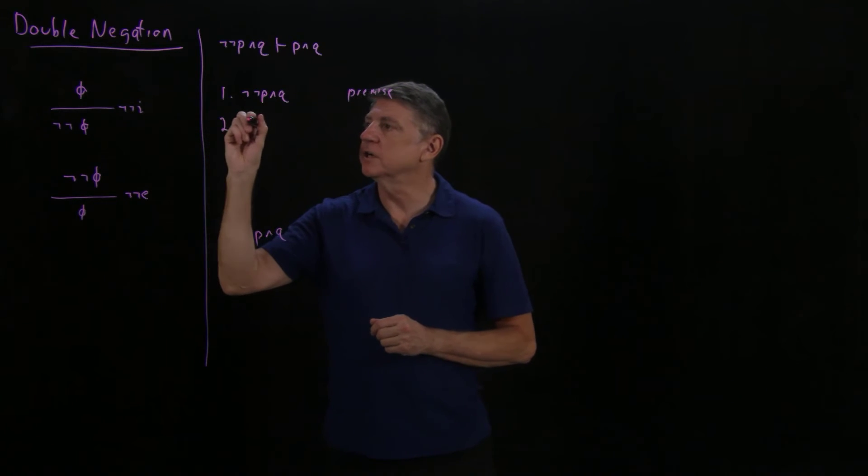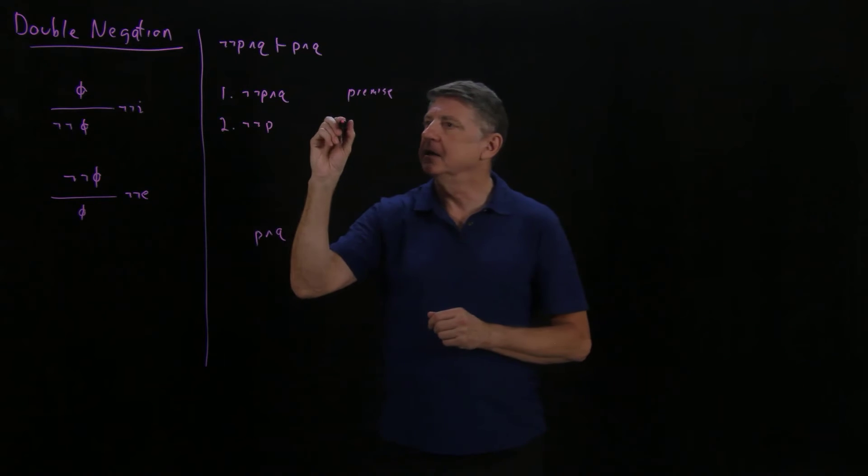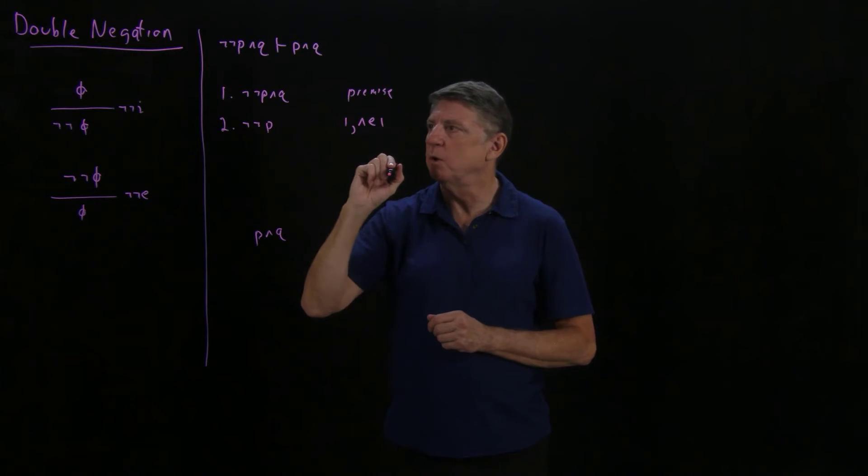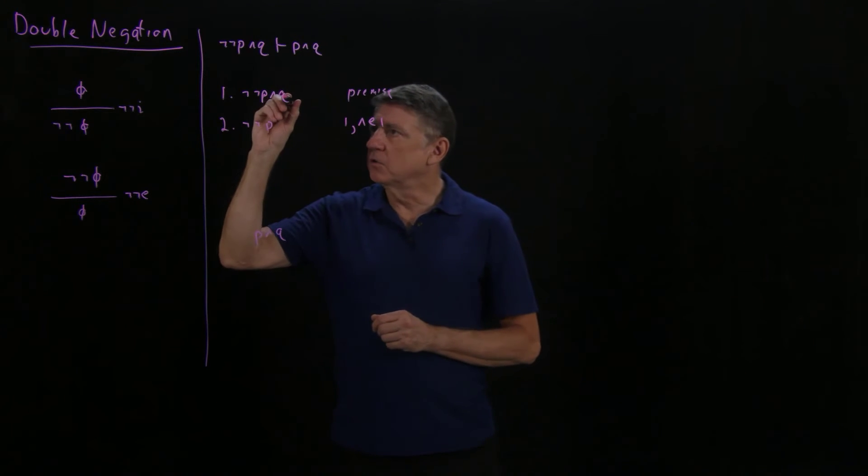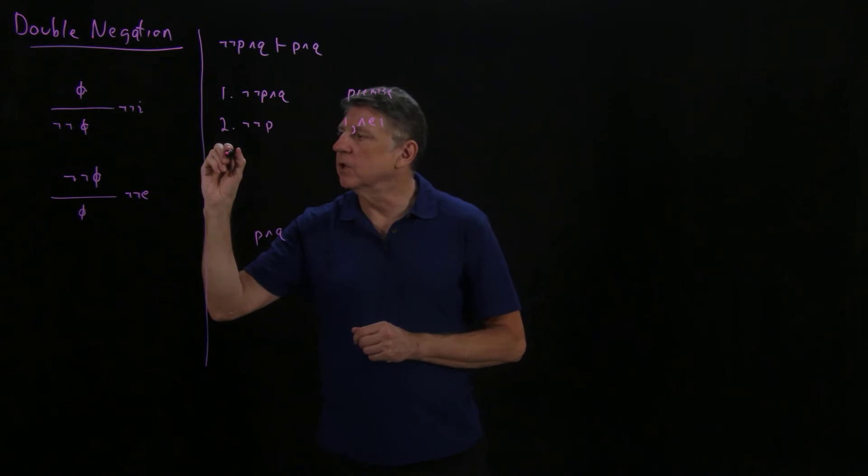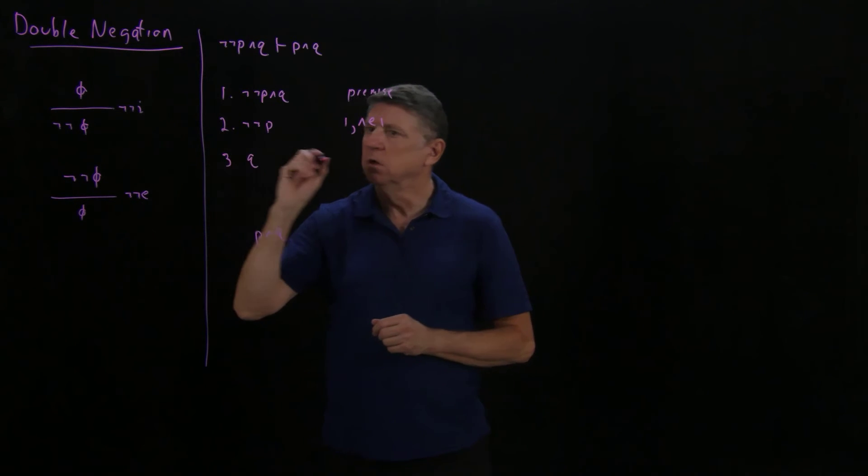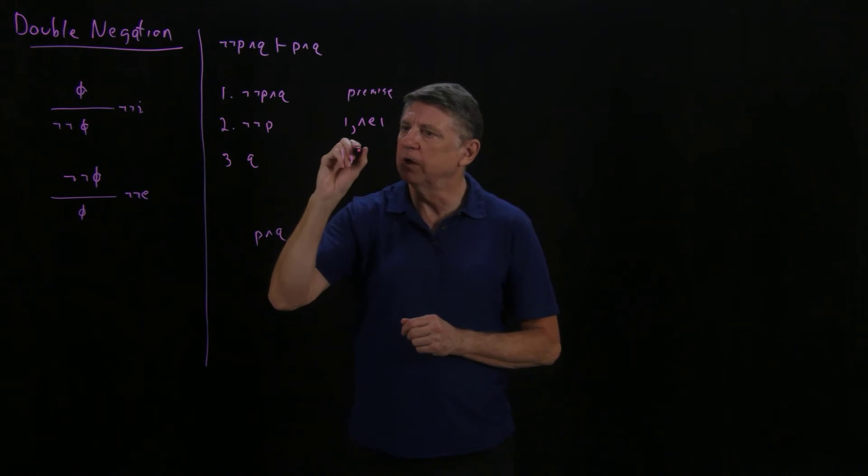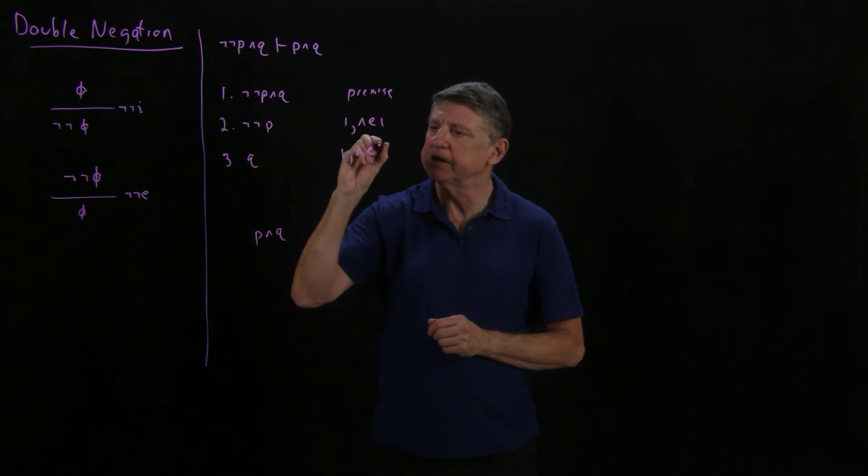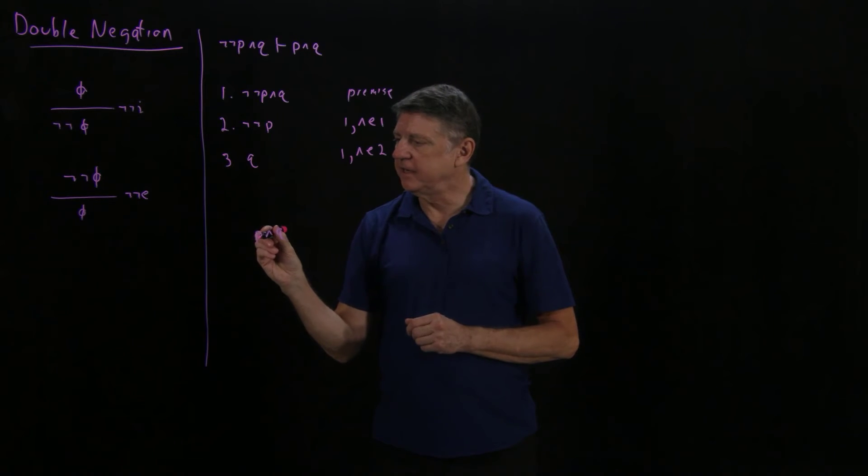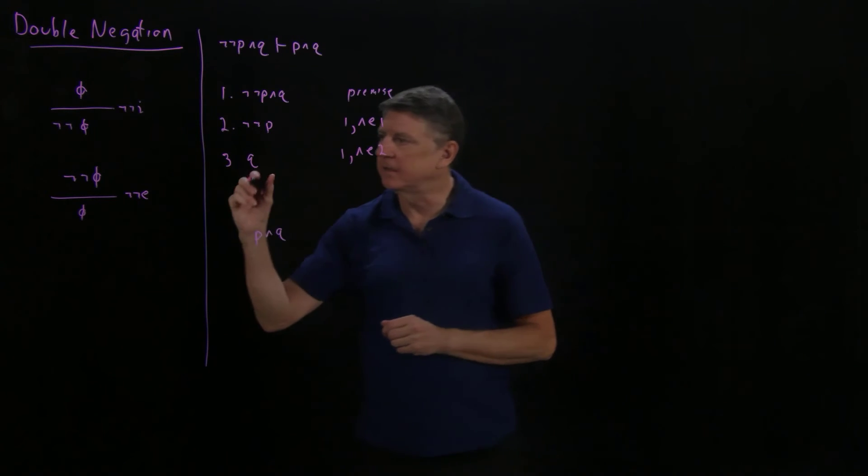I'll start with the left conjunct, so I'll assert not not p, and I'll do that because from line one, I can use conjunction elimination type one. I can also pull q out onto its own line, so that would be q comes from line one using conjunction elimination type two, and in order to get here, I have to have p on its own line.